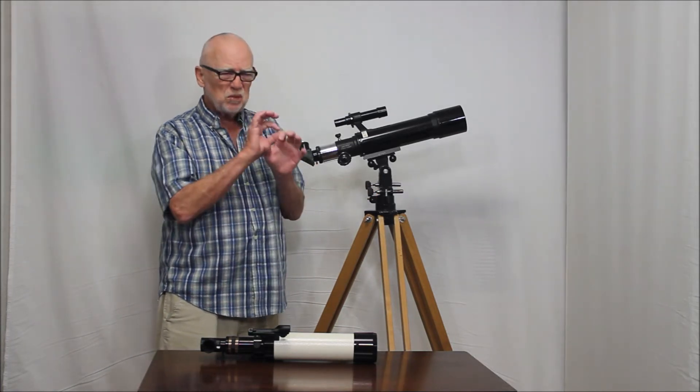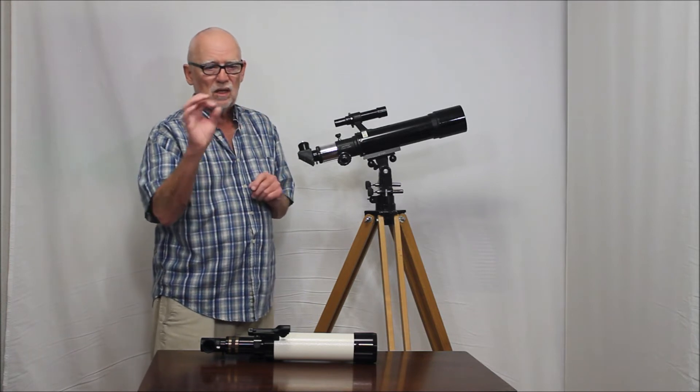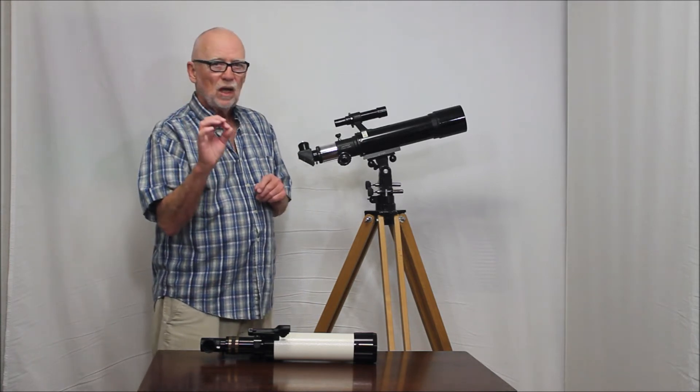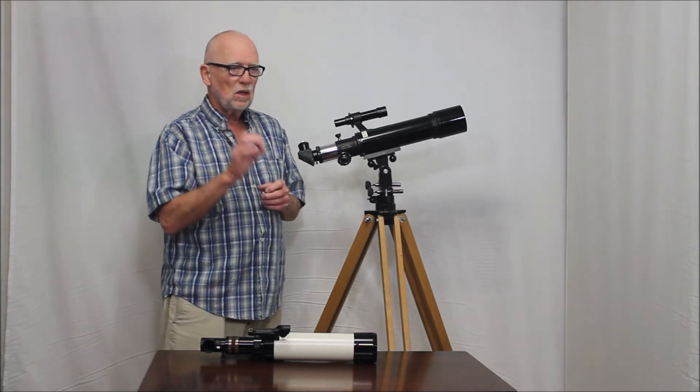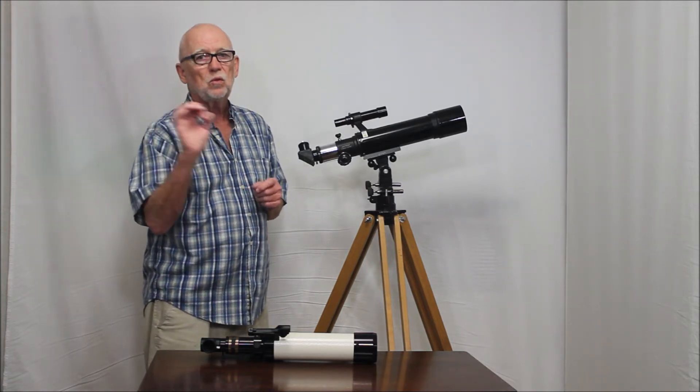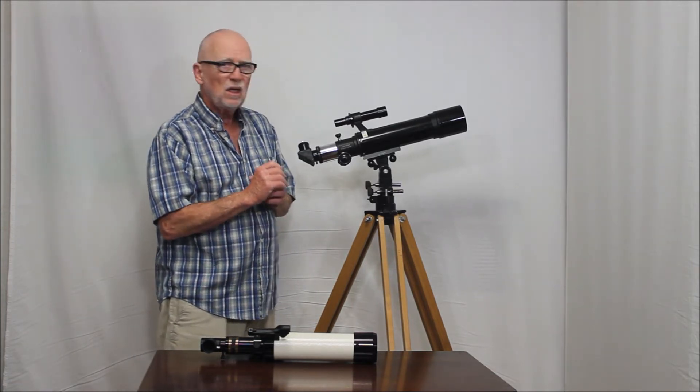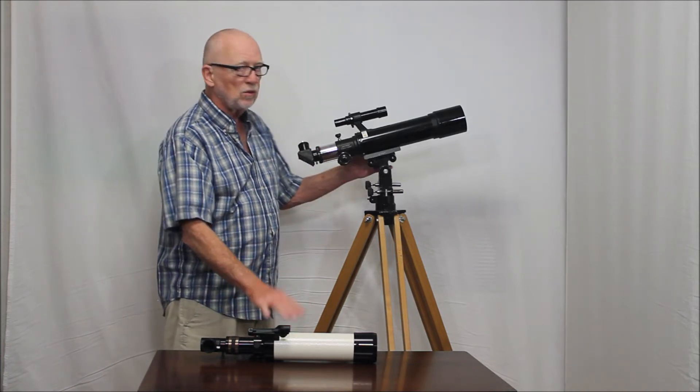Saturn, Jupiter was showing beautiful, lots of lines and festoons. And you could see there was either a moon that's either silhouetted or a shadow of a moon crossing the surface of the planet. Beautifully visible in both of these scopes.